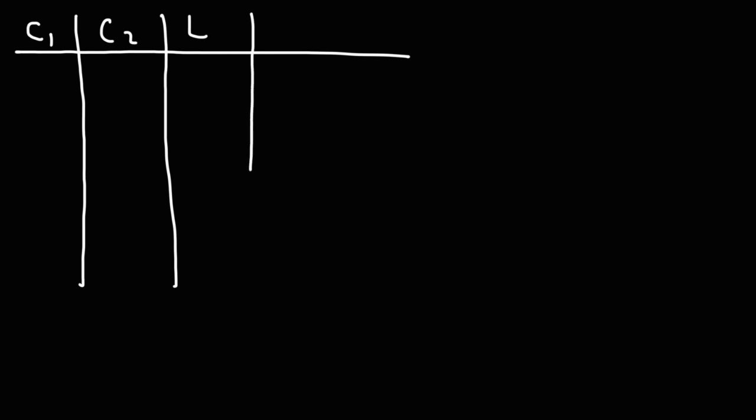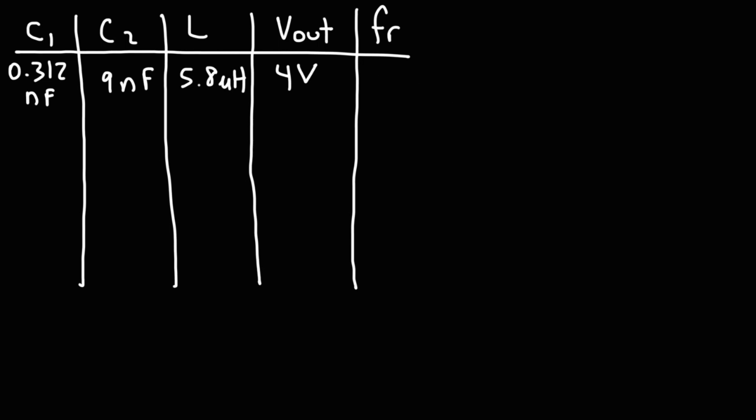Here's a table of some other values that I've used in this experiment, as well as the output frequency that was generated from these values. We have C1, C2, L, the output voltage, and the frequency. Using the measured value of 0.312 nanofarads for C1, and approximately 9 nanofarads for C2, and L being set to 5.8 microhenries, the output voltage, that is the peak voltage, was 4 volts. And the measured frequency was 3.4 megahertz.